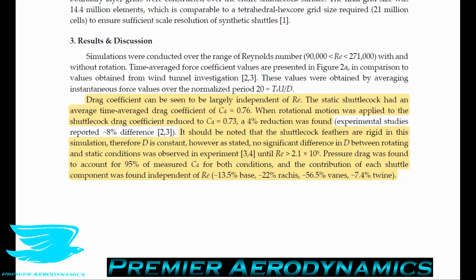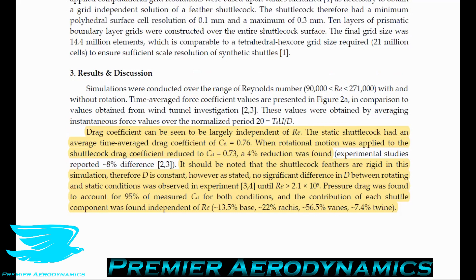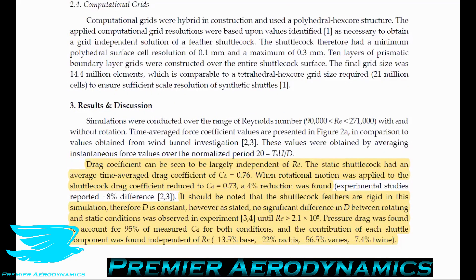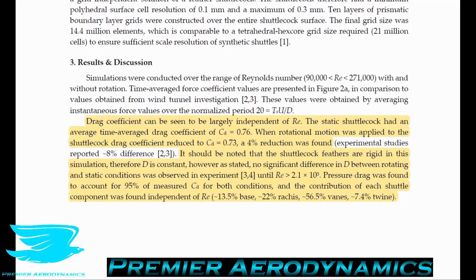No significant difference in skirt diameter between rotating and static conditions was observed experimentally until Reynolds number 210,000. Pressure drag accounts for 95% of the measured drag for both conditions. Breaking it down by component: 13.5% of the drag came from the base, 22% from the feather quills connecting feathers to the cork, 56.5% from the veins, and 7.4% from the twine. The remaining 5% is skin friction and vortex drag.